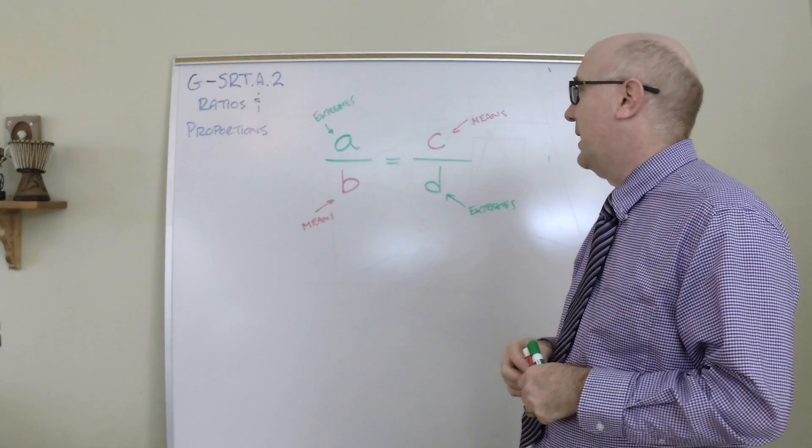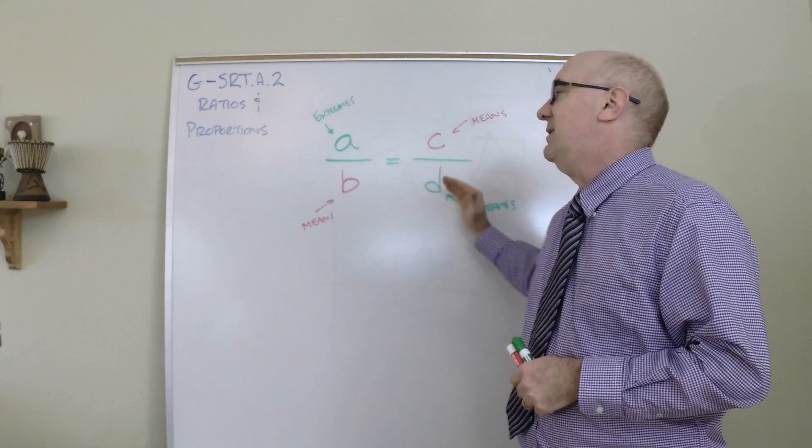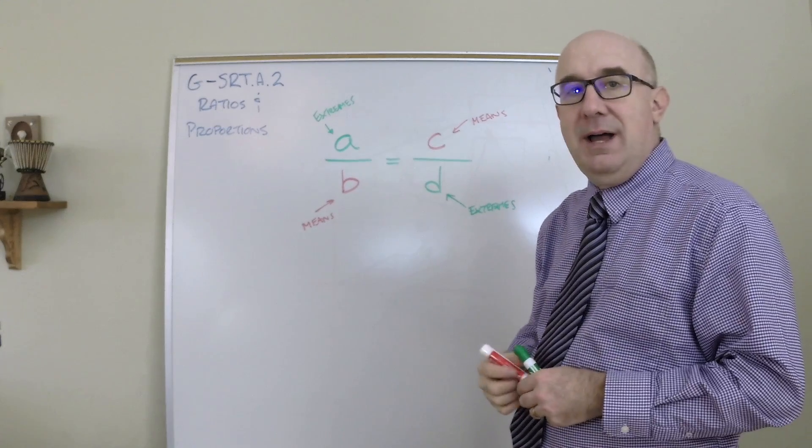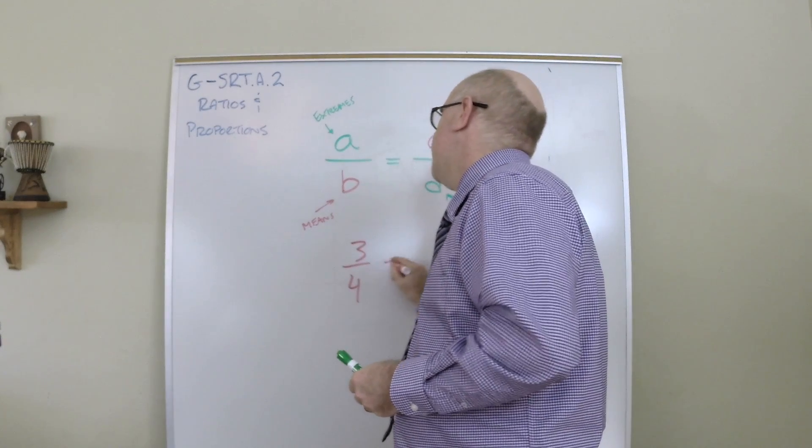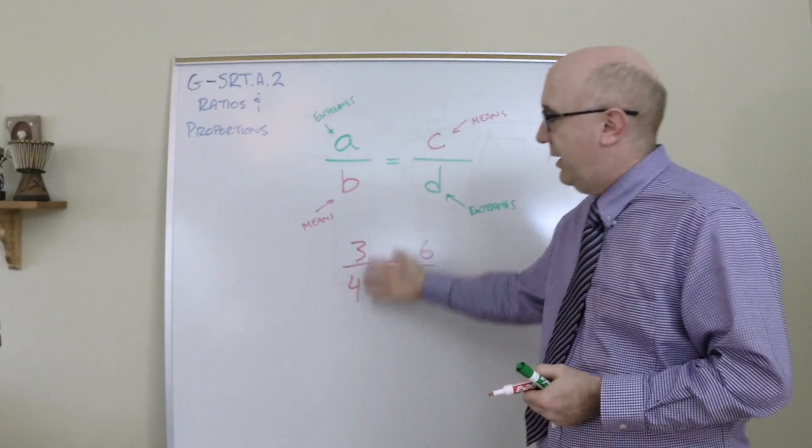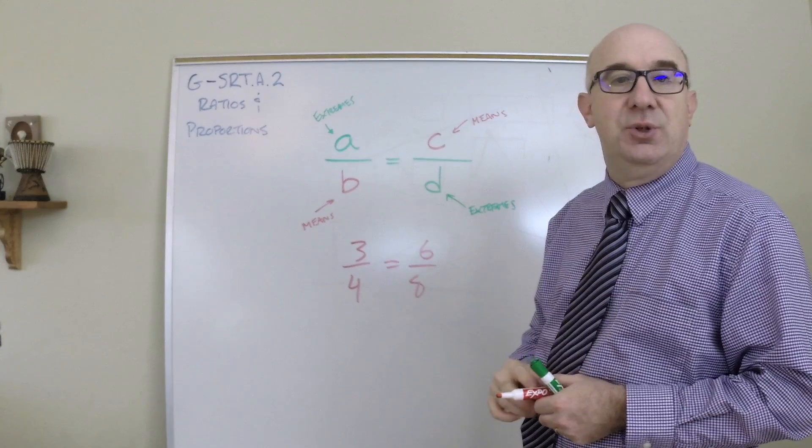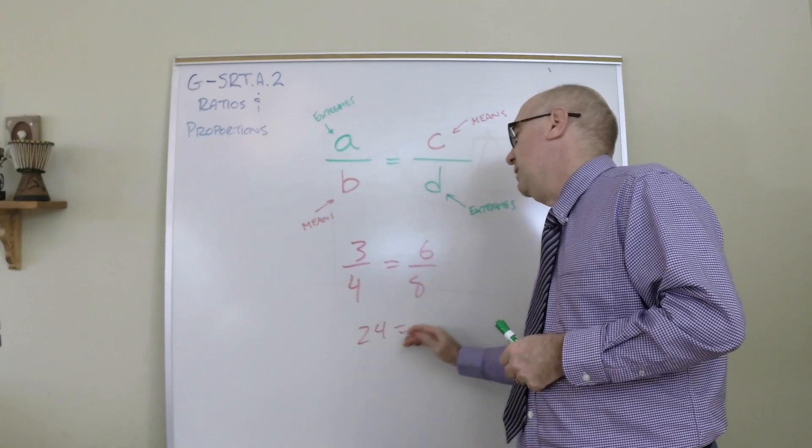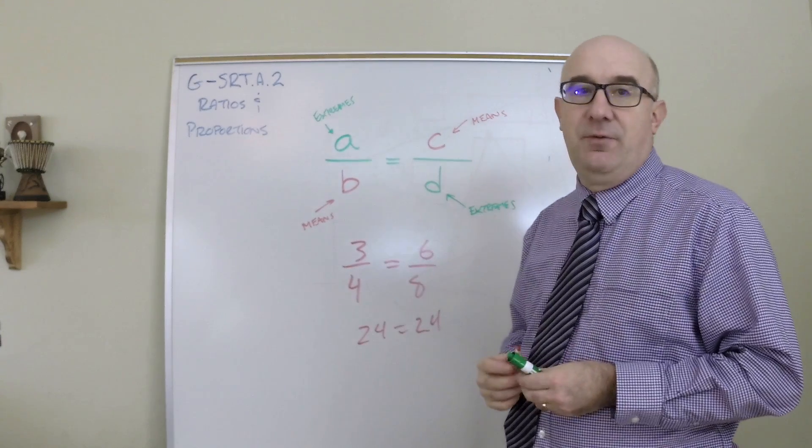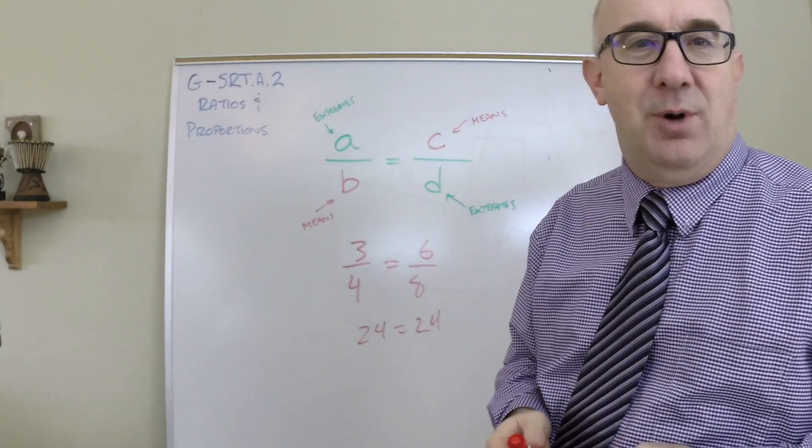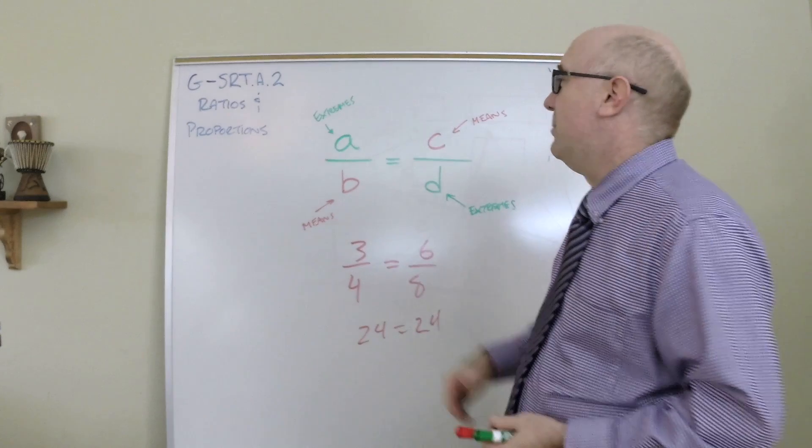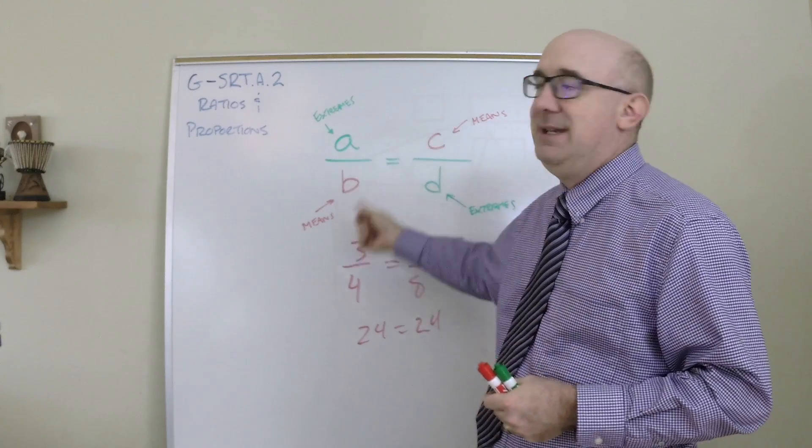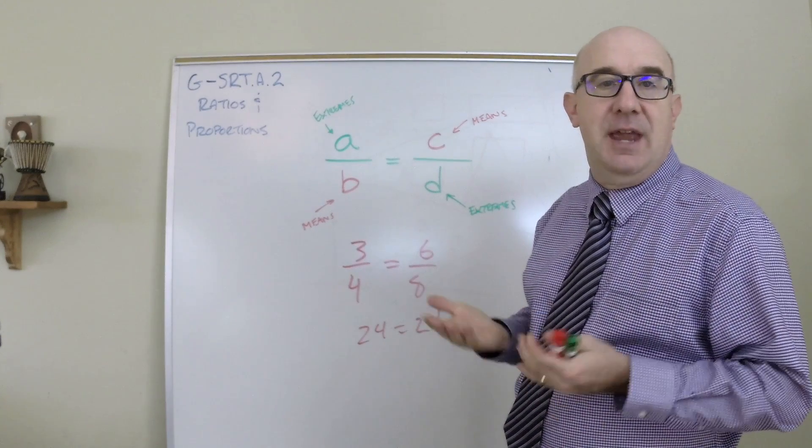There's even some more technical terms - we don't get into this much, but A and D are called the extremes and B and C are called the means. And you know that from equality of fractions, like 3/4 equals 6/8, one of the ways to test the equality of those fractions is to cross multiply. You see the 24 equals 24 - 3 times the 8, the 6 times the 4. We use this phrase cross-multiplying. That's how the cross-multiplicative pattern works - we multiply the means and the extremes and they have to be equal to each other.